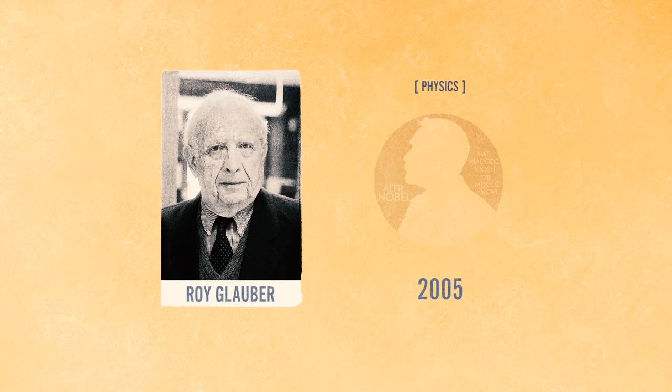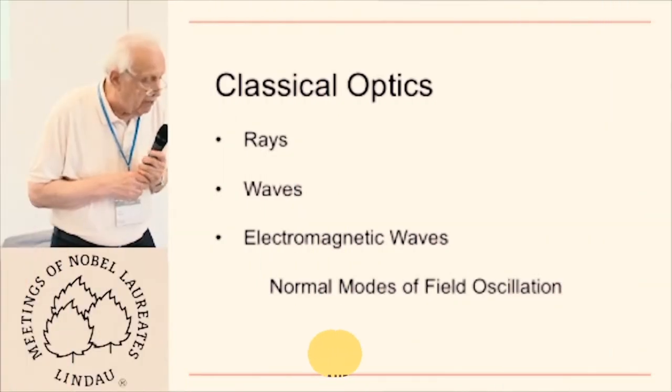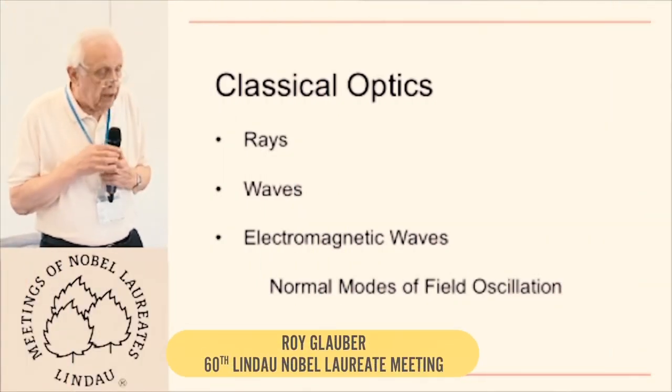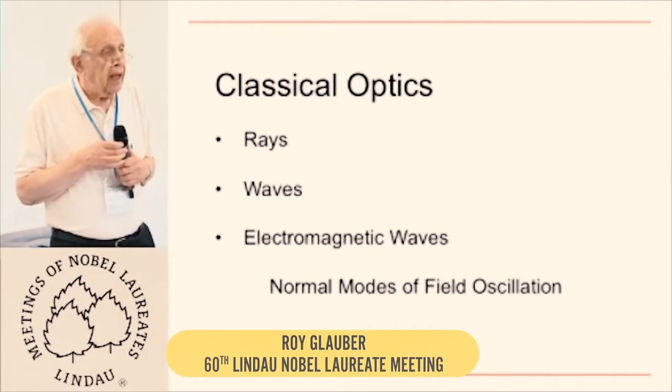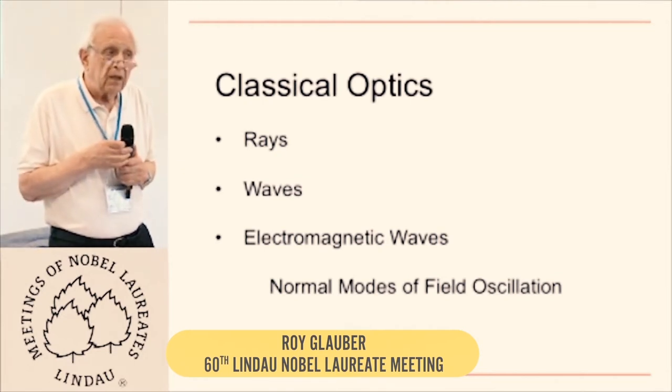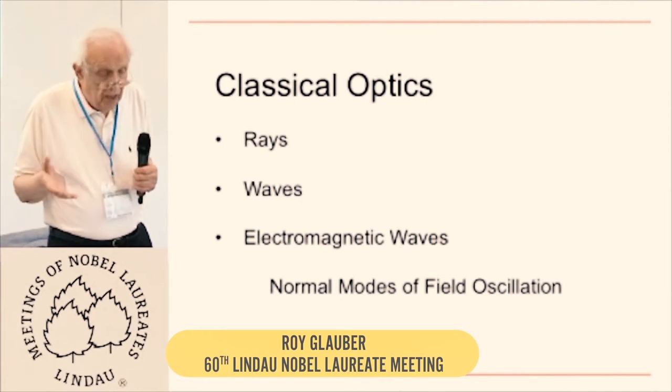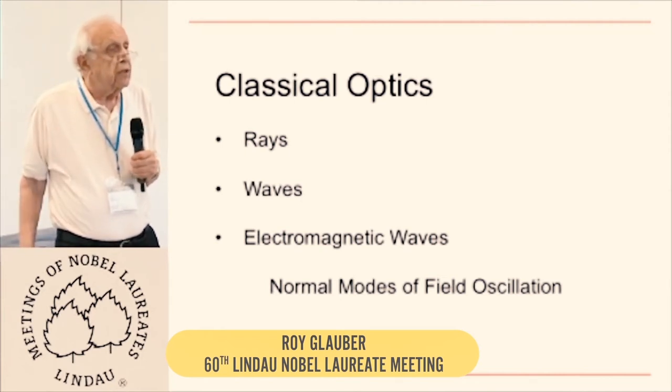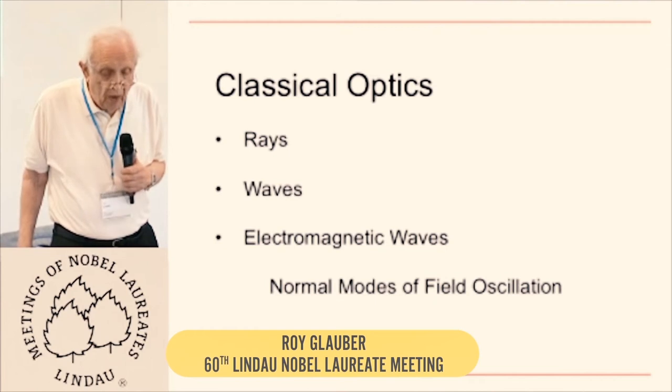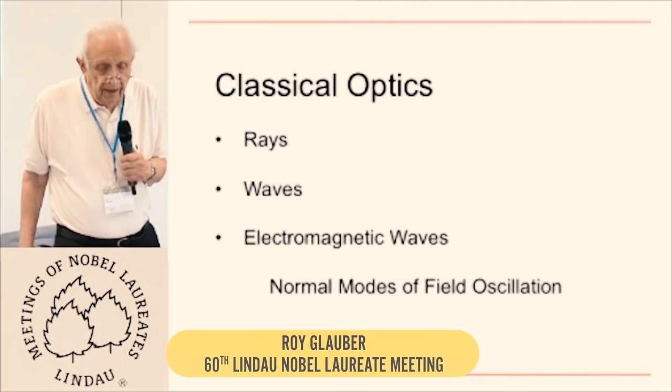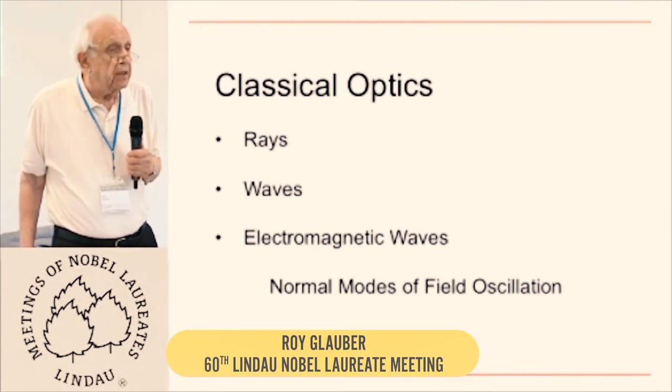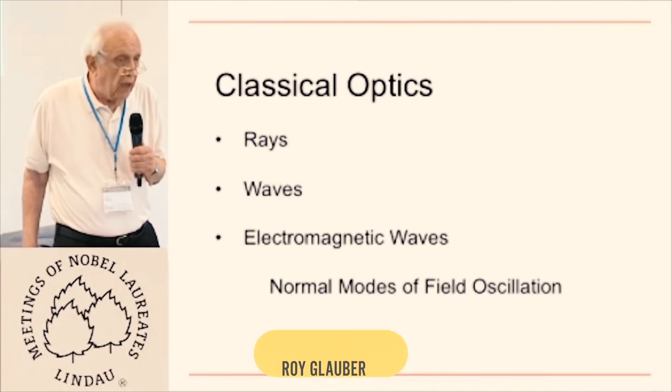Nobel laureate Roy Glauber gives a high-level overview of key discoveries about the properties of light in the 19th century. It begins, of course, with drawing straight lines to represent light rays. And it was determined that these straight line diagrams are actually describing the progress of waves. And toward the late 19th century, it was discovered specifically that these are electromagnetic waves.